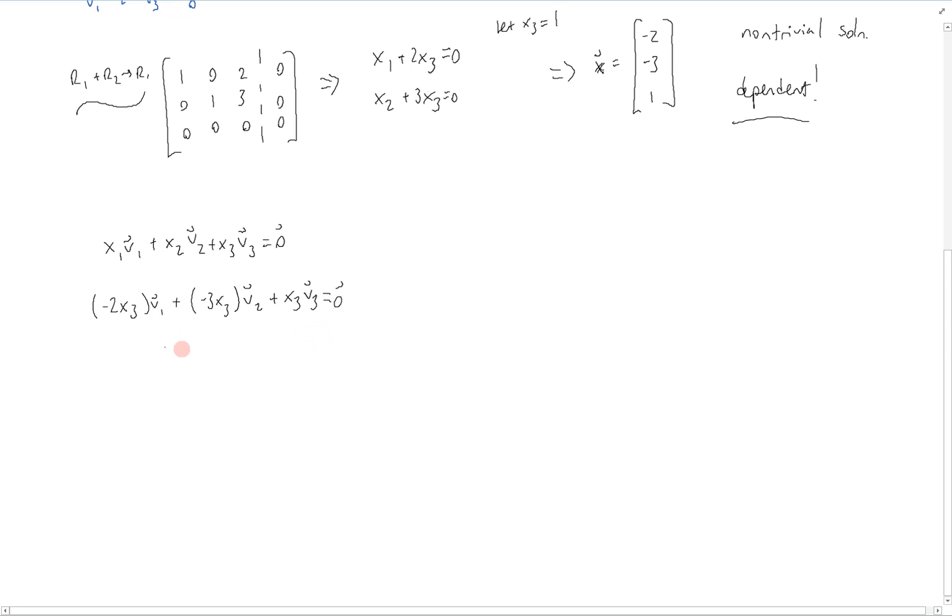If we factor out an x3, we can see that it becomes negative 2v1 plus 3v2 plus v3 equals zero. And so we can see that not only will x3 equal to zero make this all equal to zero, but also a combination of the vectors in here.